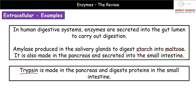The second example of an extracellular enzyme is trypsin, which is also made in the pancreas. Trypsin is a protease enzyme — from GCSE, protease enzymes digest proteins. Trypsin is secreted into the small intestine, where it breaks proteins down into amino acids that we can then absorb and utilize in other ways.